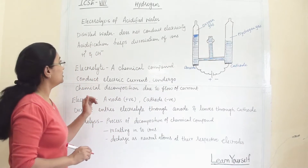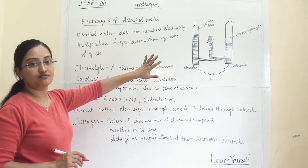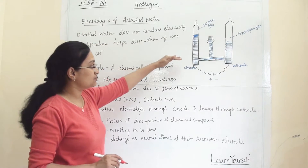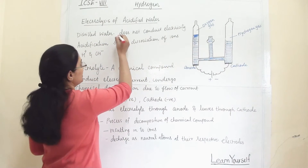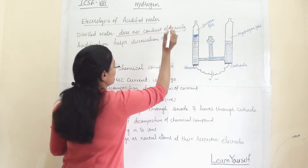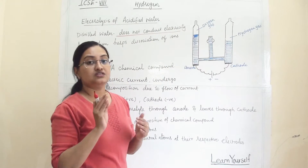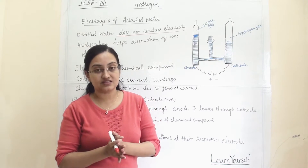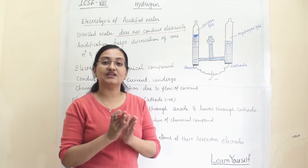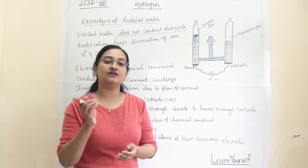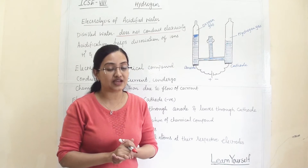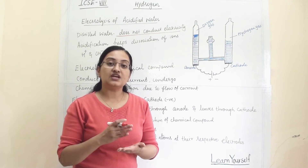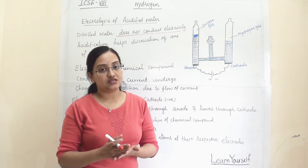First of all, we will see what all things we require for this electrolytic cell. We have taken distilled water and then we will acidify it. Why? Because distilled water cannot conduct electricity — there are not many ions or minerals in it which can conduct electricity. So when we add a few drops of sulphuric acid, this acid will dissociate water into H⁺ and OH⁻ ions.